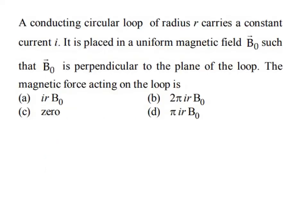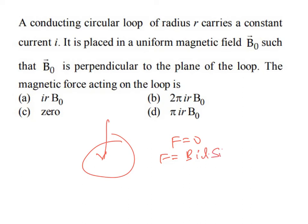Next problem: a conducting circular loop of radius r carries a constant current i in a uniform magnetic field B₀ perpendicular to the plane of the loop. The net force on the loop is zero, because diametrically opposite current elements experience equal and opposite forces that cancel. Option C is the right answer.